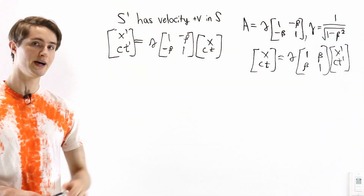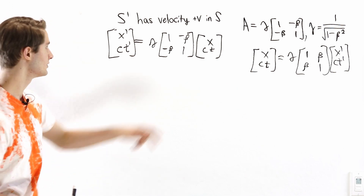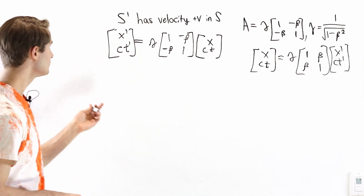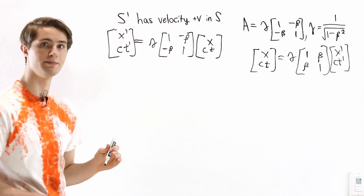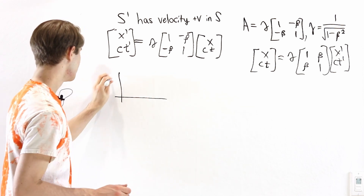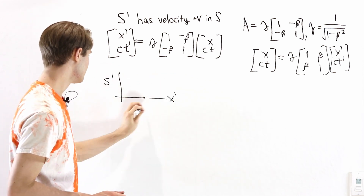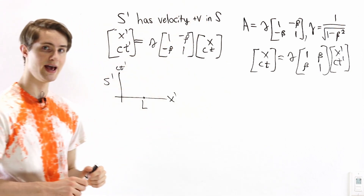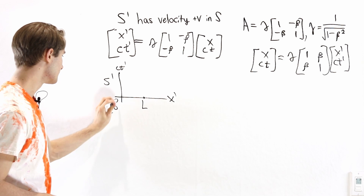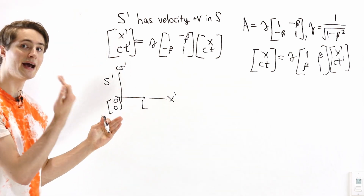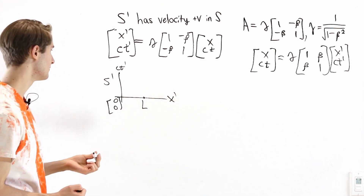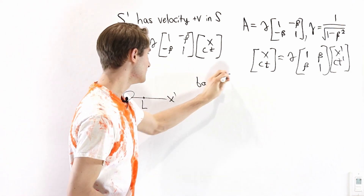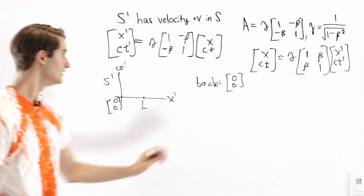We're going to start by looking at length contraction, which says that if an object is moving in some reference frame S, it will appear to be shorter than in a reference frame where the object is stationary. So let's suppose we have an object that's stationary in S' and has a length L. If we look at a spacetime diagram in S', we have a point at the origin and a point at X' equals L. We want to transform this object into reference frame S. One of the points is going to be at the origin — the back end of the object at X' equals 0 — and applying any matrix to the zero vector gives us zero back, so the back end is observed at 0, 0 in S.